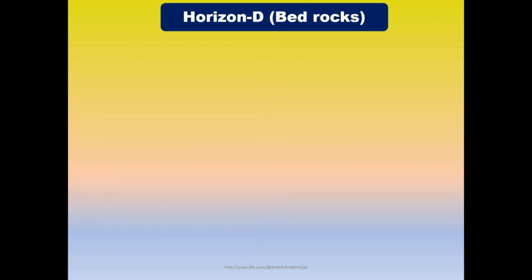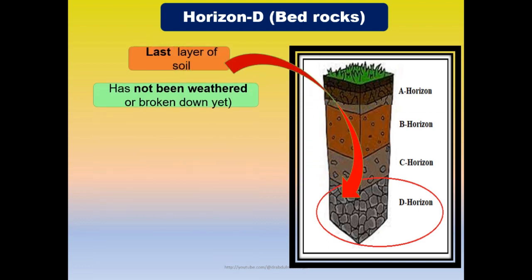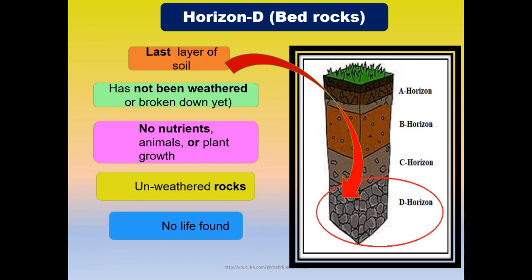Soil horizon D consists of bed rocks. It is the last layer of the soil. It has not been weathered or broken down yet — these are the bed rocks, the parent material. There are no nutrients, animals, or plant growth found. Unweathered rocks are found and no life exists.